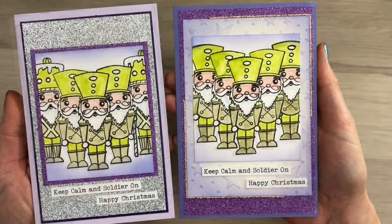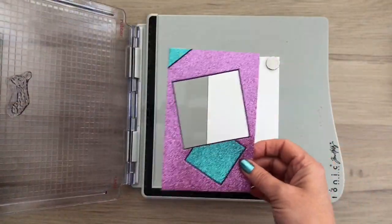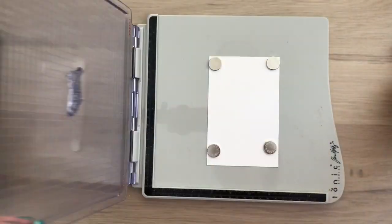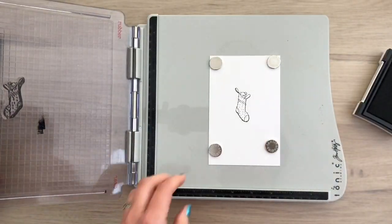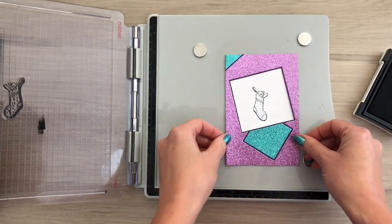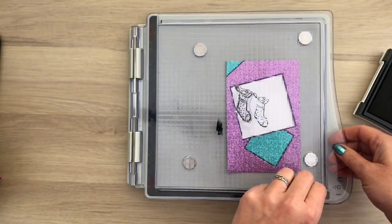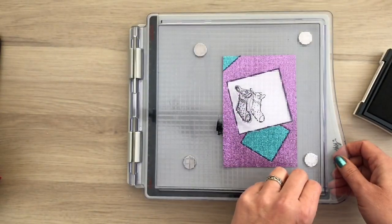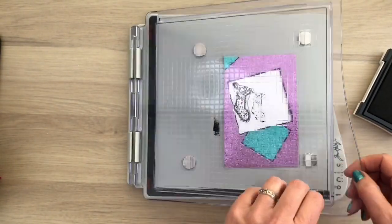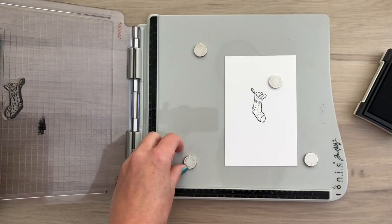Now for the next card I already made a frame and I used that to fit the next stamp. And I stamp the sock in the middle. Use the frame again to measure where the next sock needs to go. And then I stamp another sock on each side.